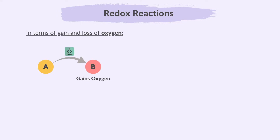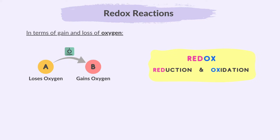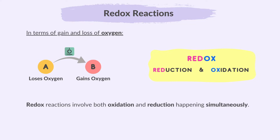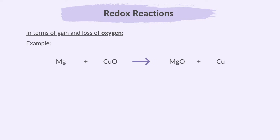When one substance gains oxygen, another substance loses oxygen. This simultaneous occurrence of oxidation and reduction is why these reactions are called redox reactions. Redox is short for reduction-oxidation. Therefore, redox reactions involve both oxidation and reduction happening simultaneously.